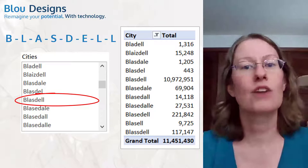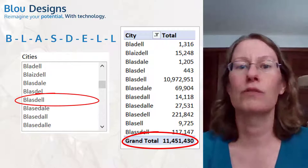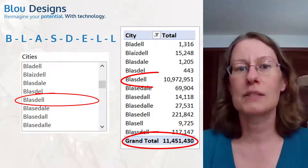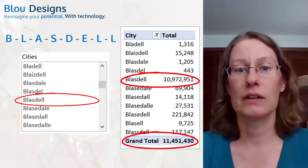But now here's a second screen capture of a summary I created from a dataset that contains all of these spelling variations. You can see that there's a grand total of roughly 11 and a half million. If I look at the correct spelling of Blaisdell, you can see that only about 11 million entries have been accounted for.